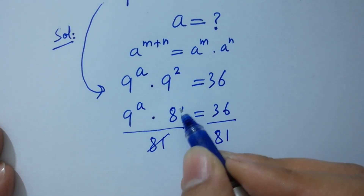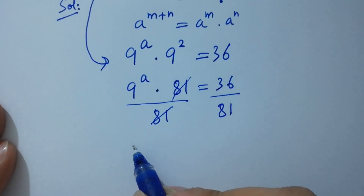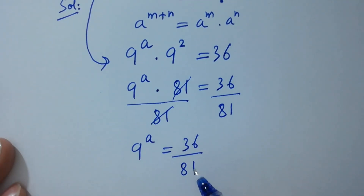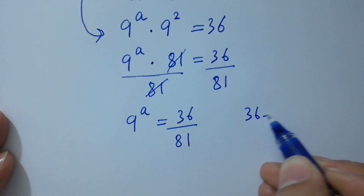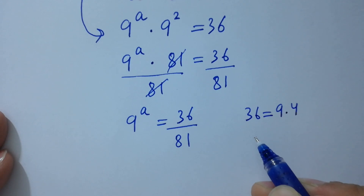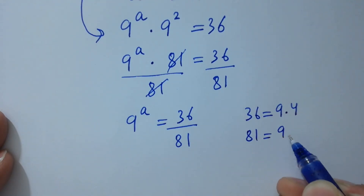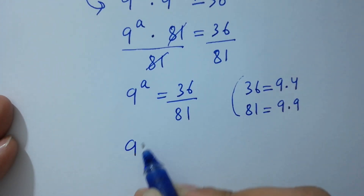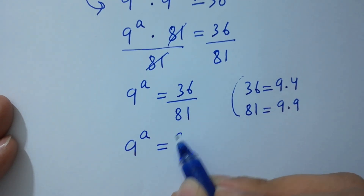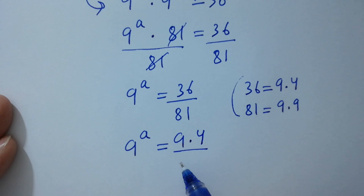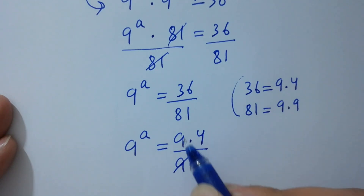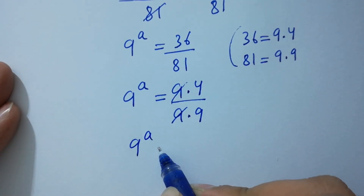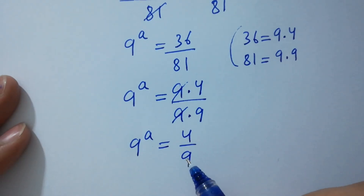9 to the power a times 81 equals 36. Divide by 81 on both sides — 81 and 81 cancel. So 9 to the power a equals 36 over 81. Since 36 equals 9 times 4 and 81 equals 9 times 9, 9 to the power a equals 9 times 4 over 9 times 9. The 9s cancel, giving 9 to the power a equals 4 over 9.